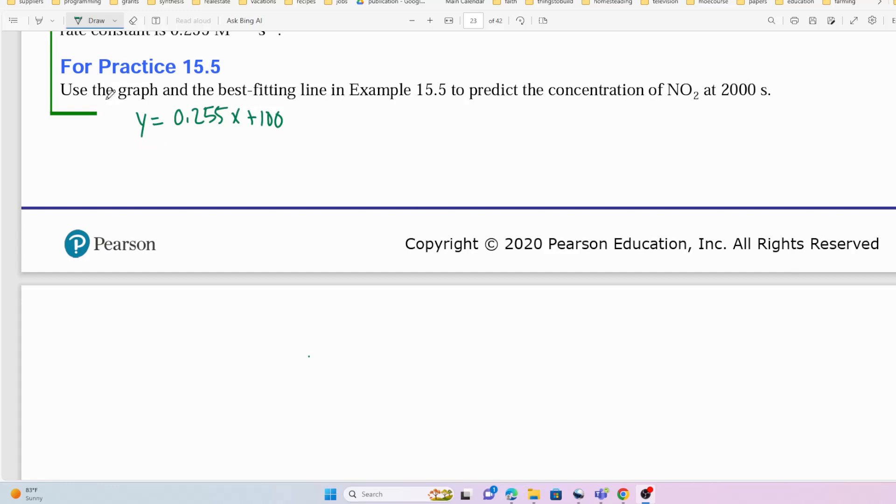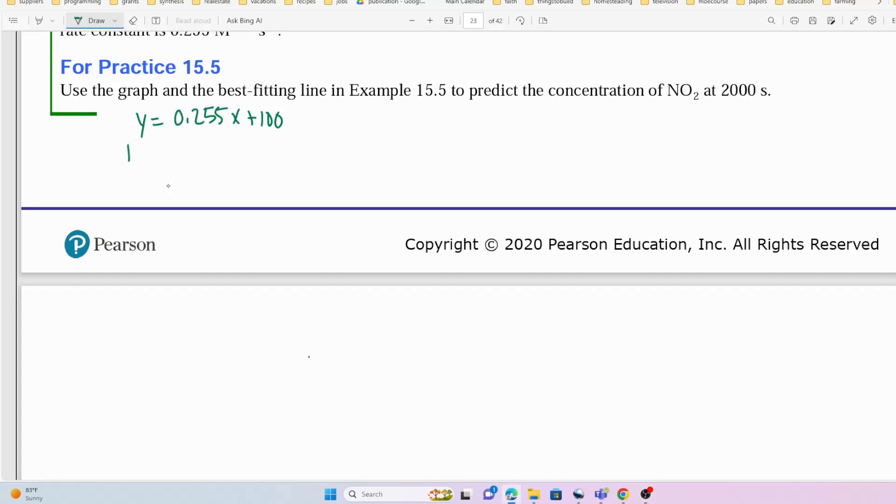So we're given this equation on our graph and we can use that to predict the concentration of NO2 at 2000 seconds. We learned earlier that this equation for this reaction fits the second order integrated rate law, which is written as 1 over the concentration of A equals kt plus 1 over the concentration of A at time zero.